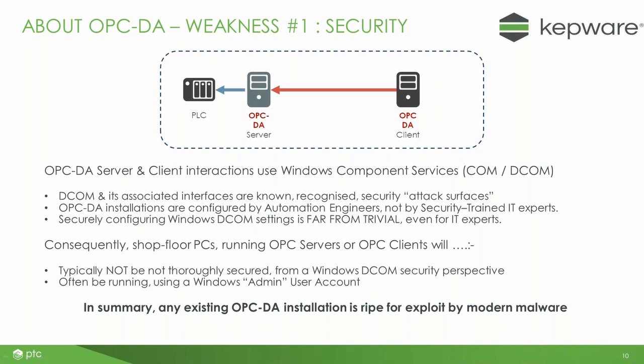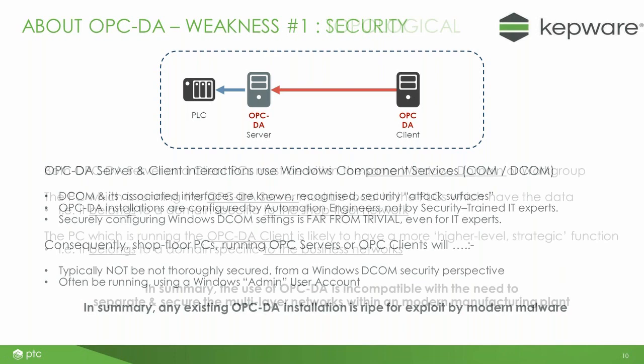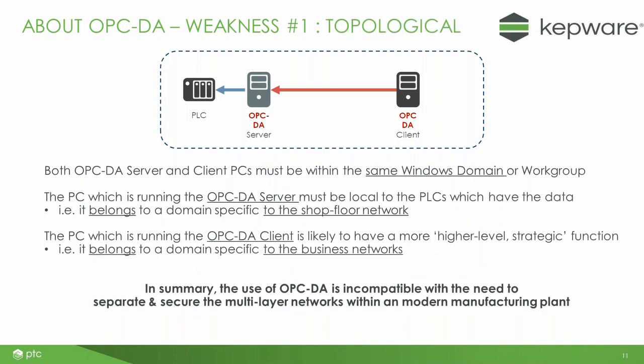Part of the purpose of this webinar is to educate people. If they do have OPC DA installations, they should review them and look to see if they can change or update them. The second weakness of OPC DA is topological. It's very common to have a DA client — where the data is being consumed — on a network that's different from the shop floor PC where the OPC DA server resides. Unfortunately, under OPC DA those two PCs need to live on the same domain and workgroup. The DA server must reside down on the shop floor, whereas the OPC DA client really needs to live on a higher-level network. Those two things don't really belong within the same domain, so DA isn't really fit for purpose for a modern manufacturing plant.